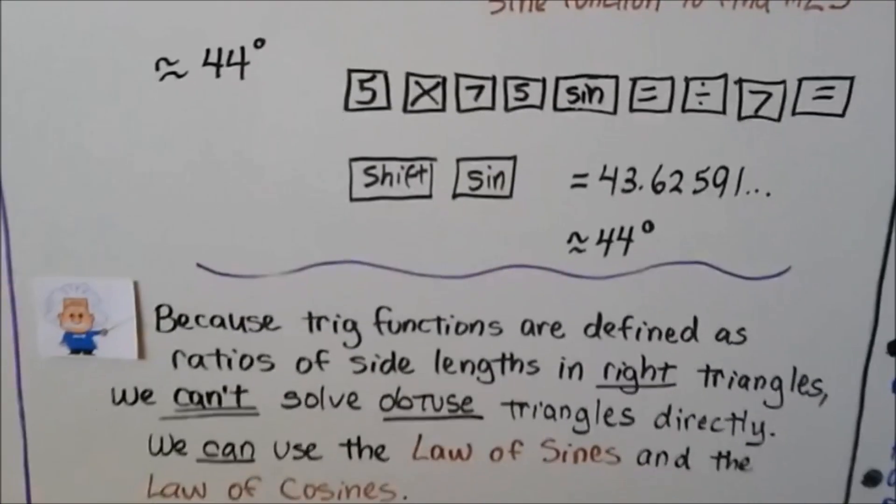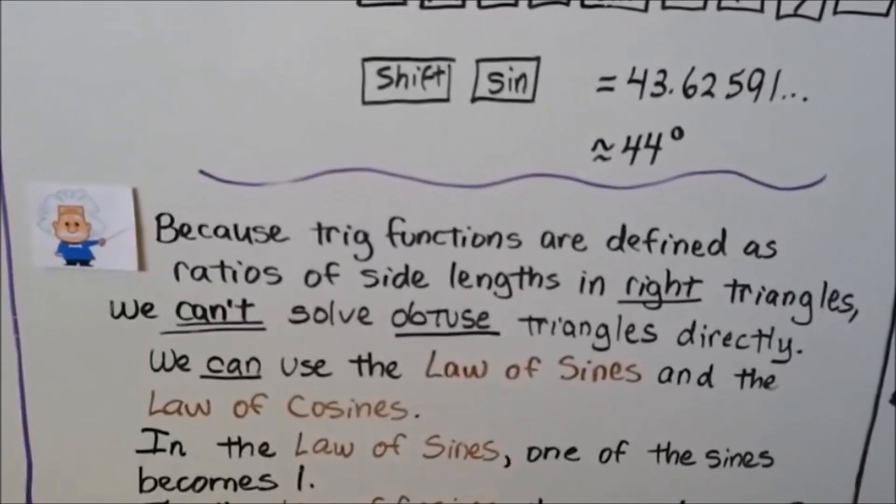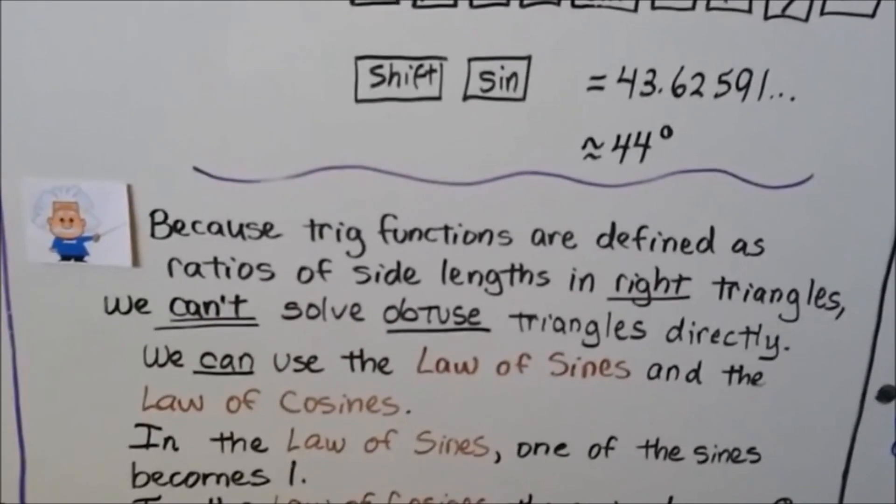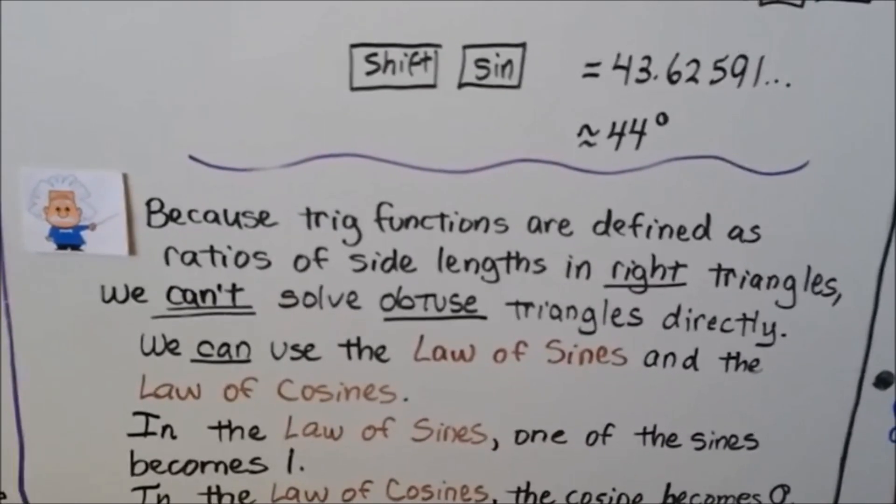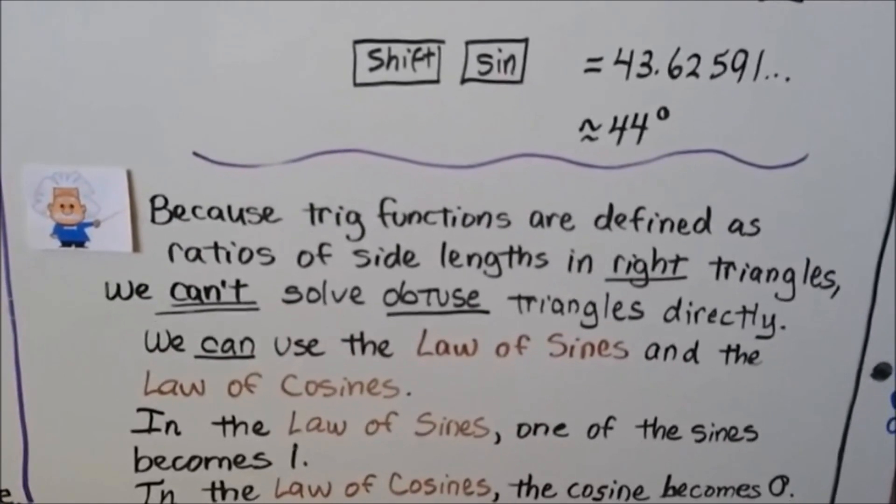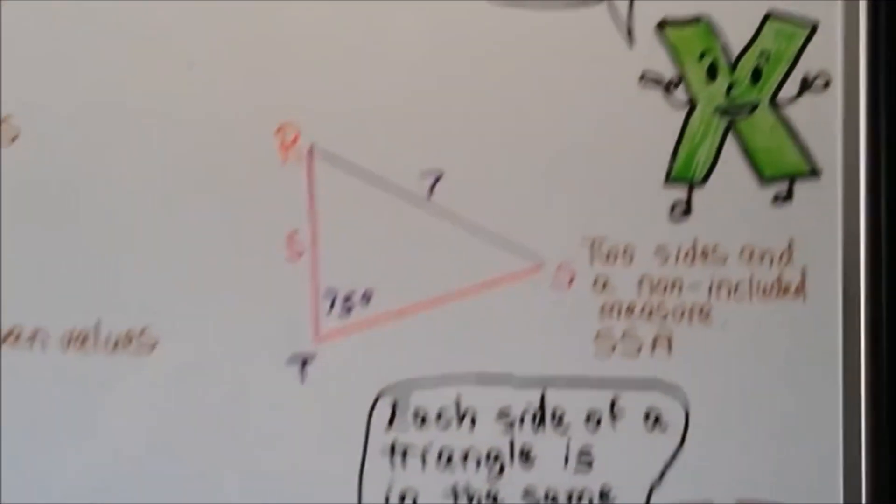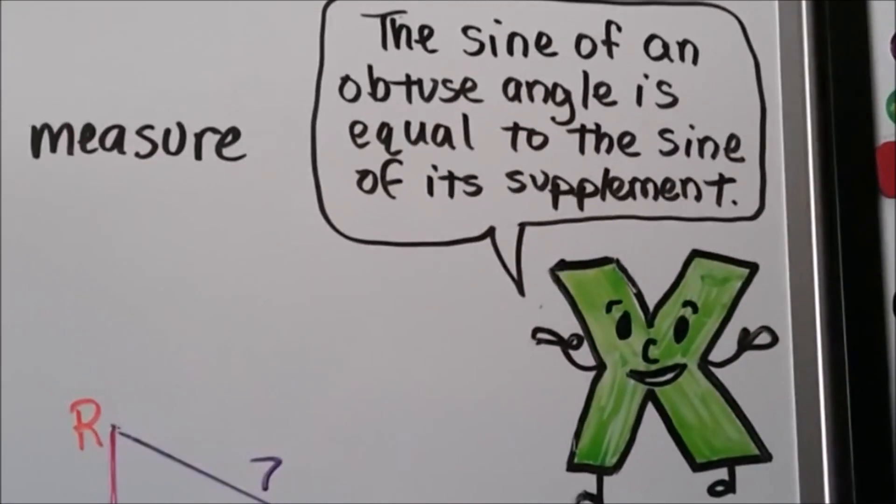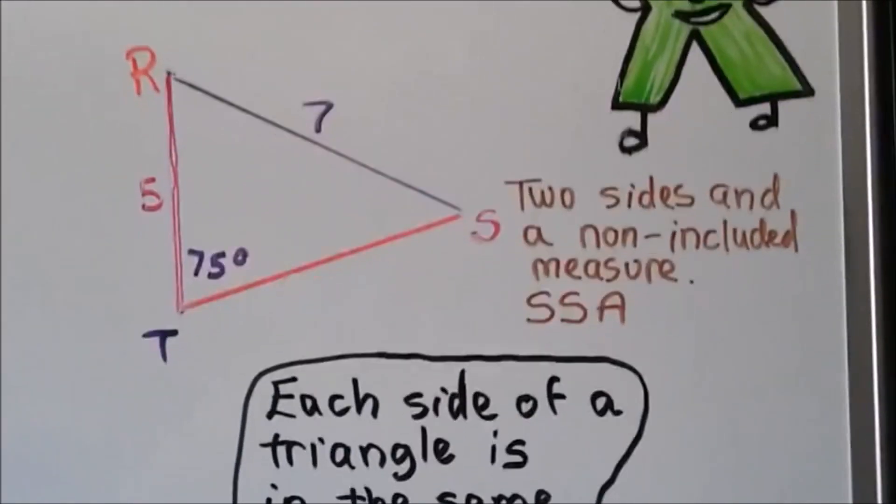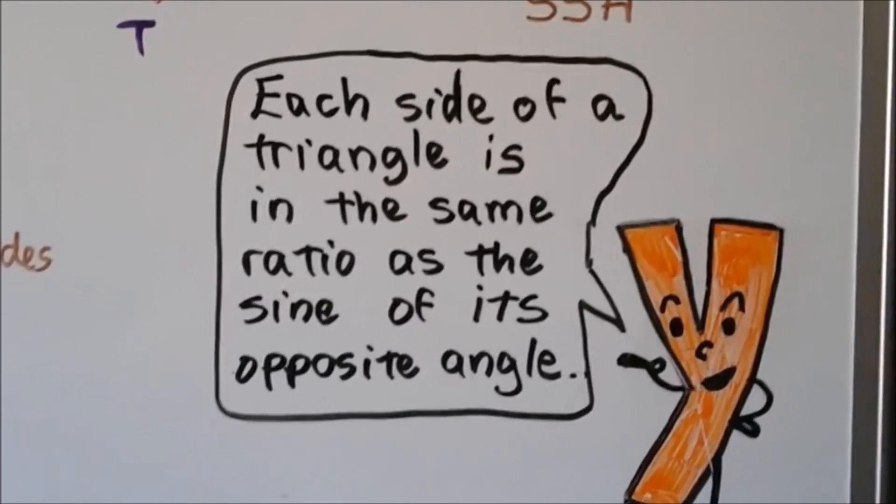Because trig functions are defined as ratios of side lengths in right triangles, we can't solve obtuse triangles directly. We can use the law of sines and the law of cosines. In the law of sines, one of the sines becomes one. In the law of cosines, the cosine becomes zero. The sine of an obtuse angle equals the sine of its supplement. Each side of a triangle is the same ratio as the sine of its opposite angle.